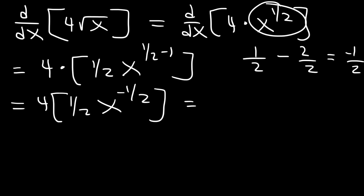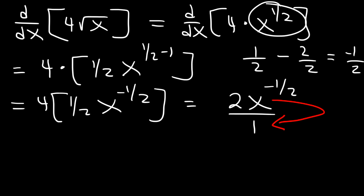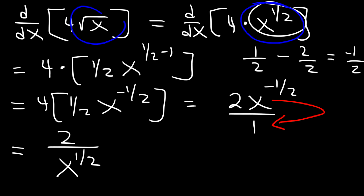We can multiply 4 and 1/2. Half of 4 is 2, so we have 2x to the negative 1/2. To convert the negative exponent into a positive exponent, we move x to the bottom. This equals 2 divided by x to the 1/2. Since x to the 1/2 is the square root of x, the final answer is 2 divided by the square root of x.